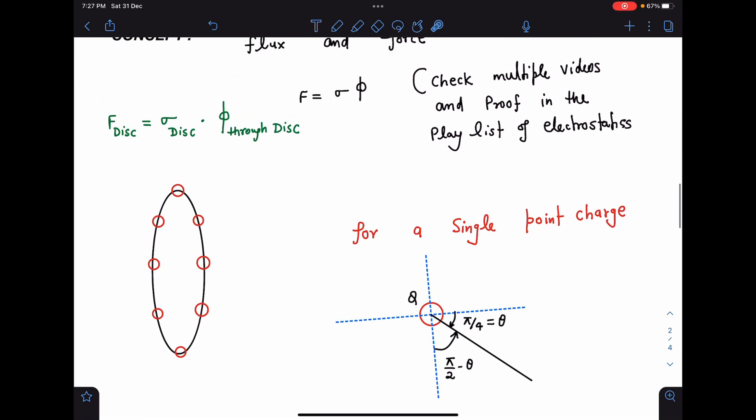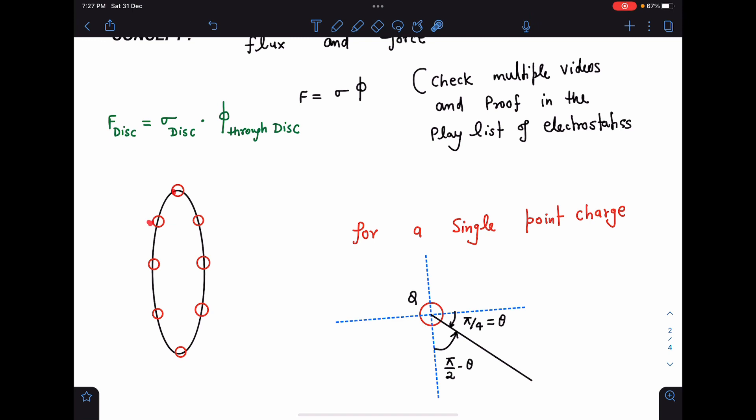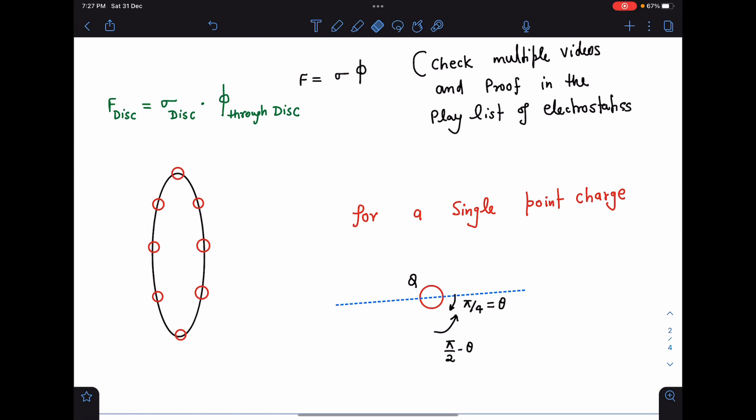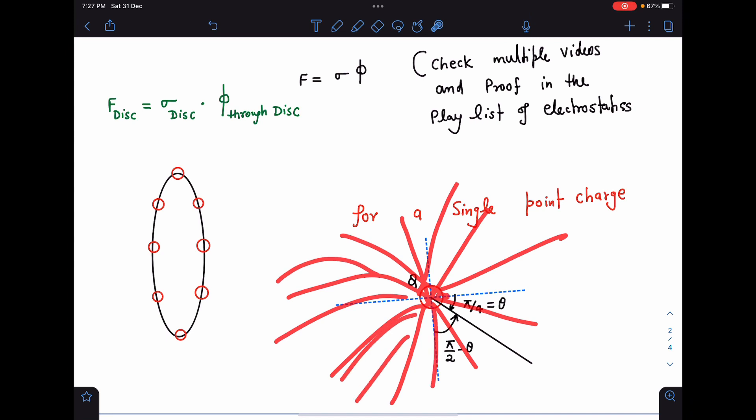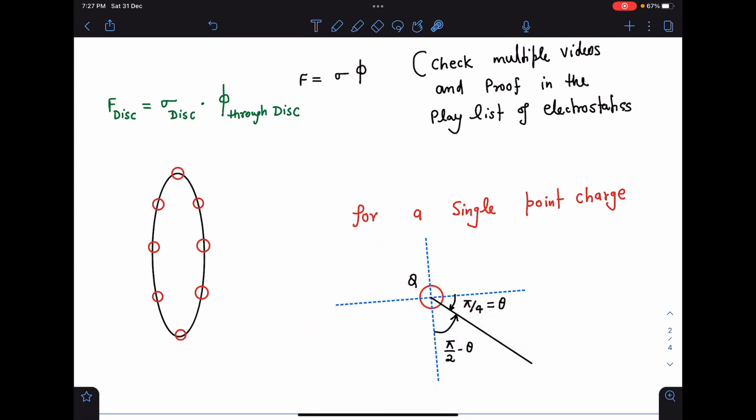When I have to calculate force on the disk, it will be σ of the disk and flux due to this ring through the disk. Now what we can do is this ring can be assumed as a collection of many point charges placed at the ring. If I take any single point charge, you can see here it's a point charge and in all possible directions field lines are emerging out of it. If this angle is θ, this remaining angle is π/2 minus θ.